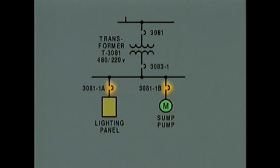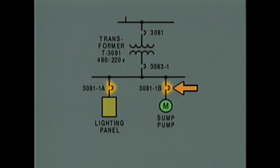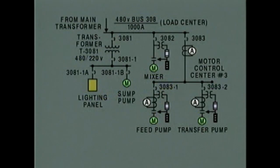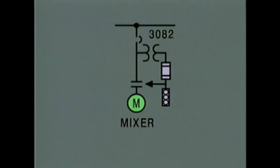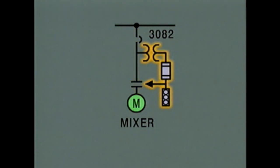These symbols represent breakers that can be used to isolate the lighting panel and the sump pump motor respectively for maintenance. The breaker in the sump pump motor circuit is also used to start and stop the motor. Now let's follow the power path through the next circuit connected to the load center — the one for the mixer motor. The mixer motor circuit actually includes two circuits: a power circuit and a control circuit.